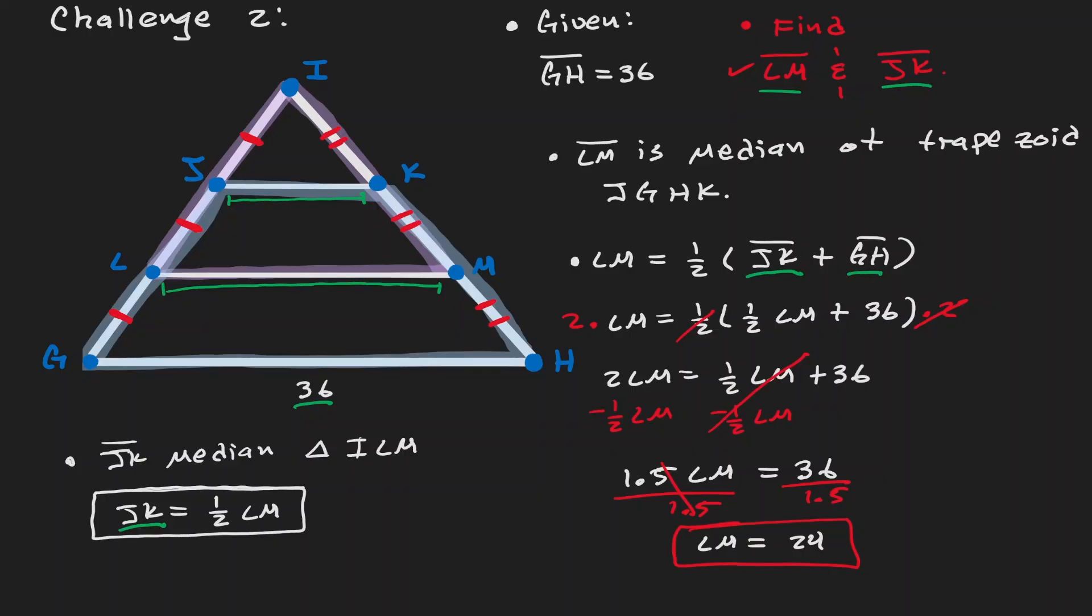Well, now that we know what's the value of LM, we have an expression here, which we can use to find the value of JK, because JK was one half of LM, which we know that is 24, which is equivalent to 12.